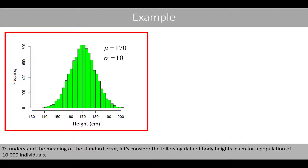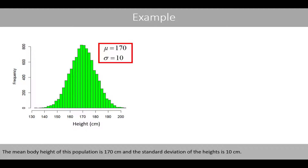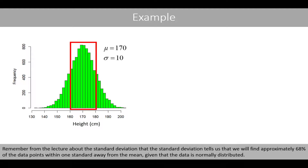To understand the meaning of the standard error, let's consider the following data of body heights in centimeters for a population of 10,000 individuals. The mean body height of this population is 170 centimeters and the standard deviation of the heights is 10 centimeters. Remember that the standard deviation tells us that we will find approximately 68% of the data points within one standard deviation away from the mean, given that the data is normally distributed.